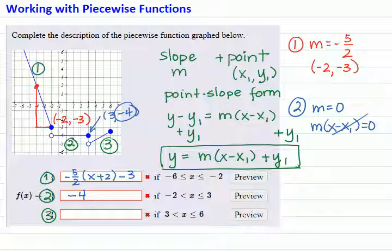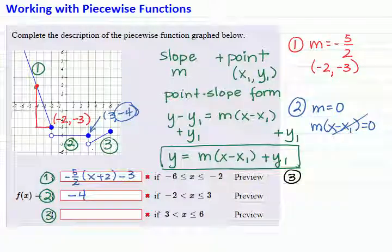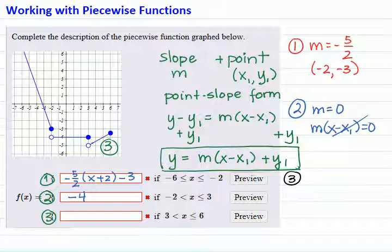For part 3, I need a point with integer coordinates. So the point is 3 comma negative 5, and another point with integer coordinates is 5 comma negative 4.